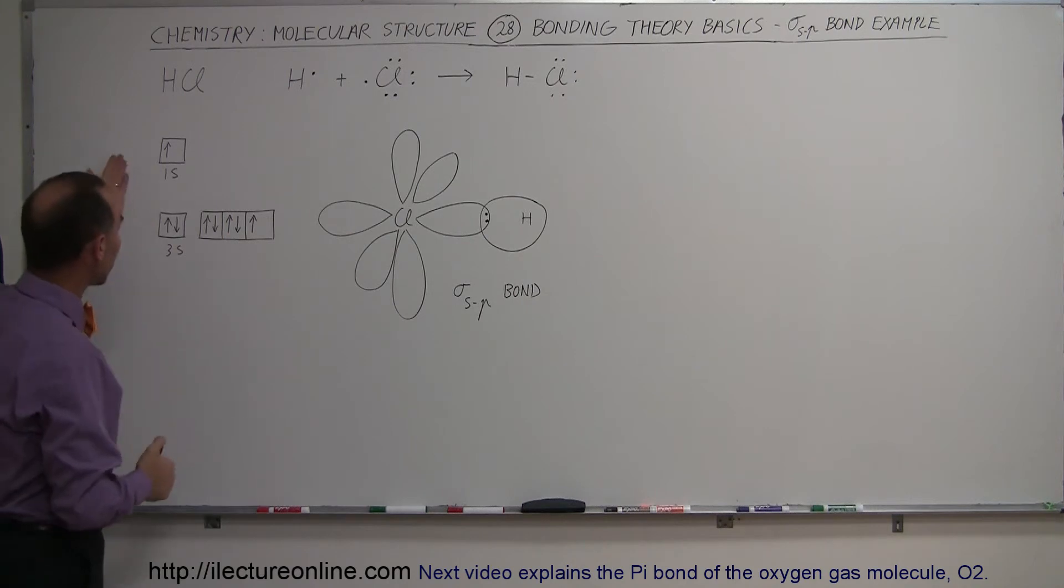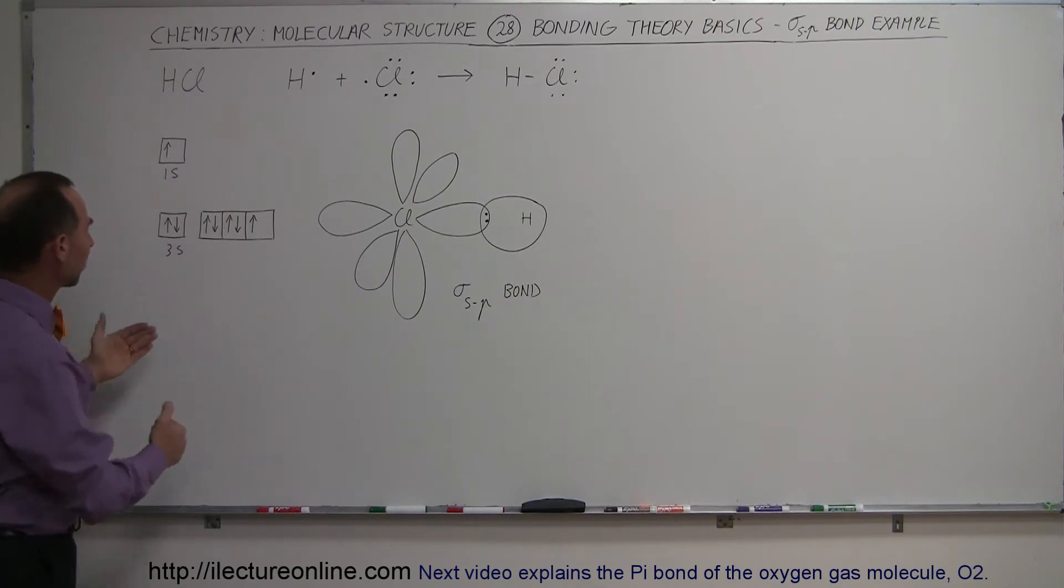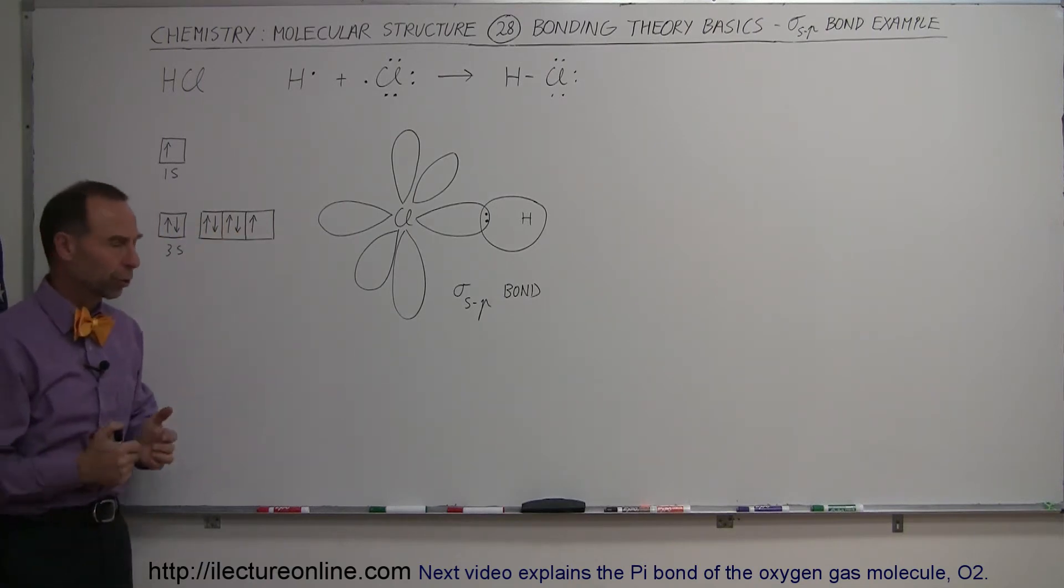And it's always a good idea to draw that out like this. So this would be the hydrogen. Here would be the chlorine. Of course, we're ignoring the second energy level and the first energy level electrons. Those are not valence electrons. We're only going to be concerned about the valence electron in the third energy level for chlorine.